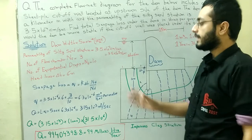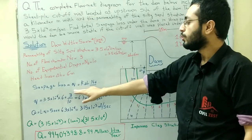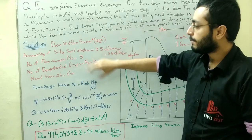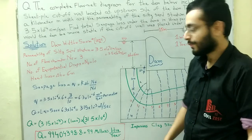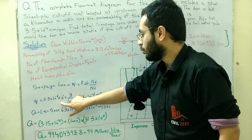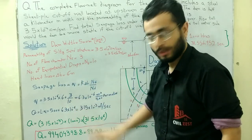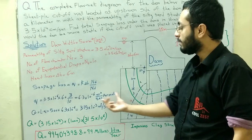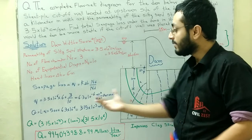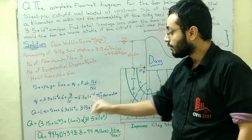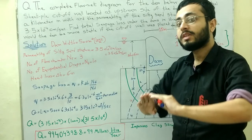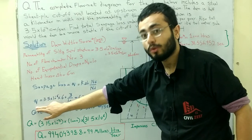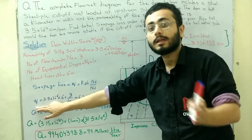Now let us calculate the seepage loss. Using the formula q = k × Δh × Nf / Nd: q = 3.5 × 10⁻⁴ cm/s × 6 m × (3/10) = 6.3 × 10⁻⁶ m³/s per meter. Note that this is seepage loss per meter of dam width, so this is the small q value.